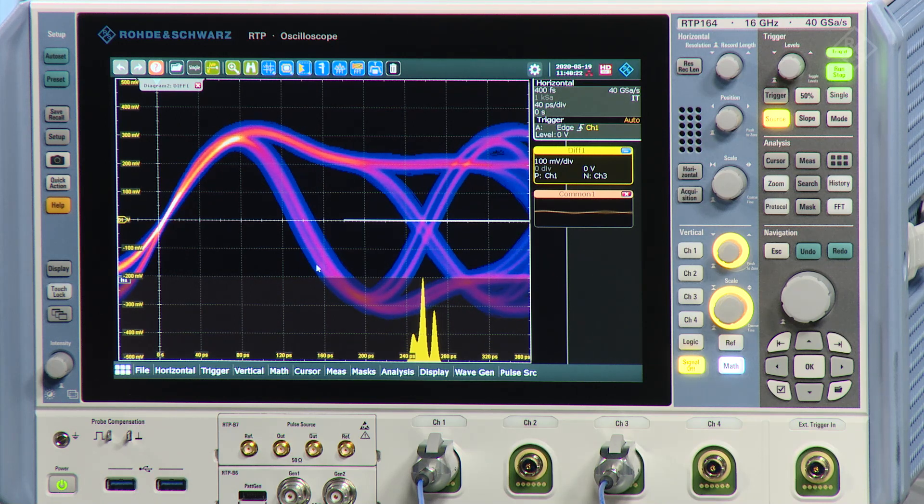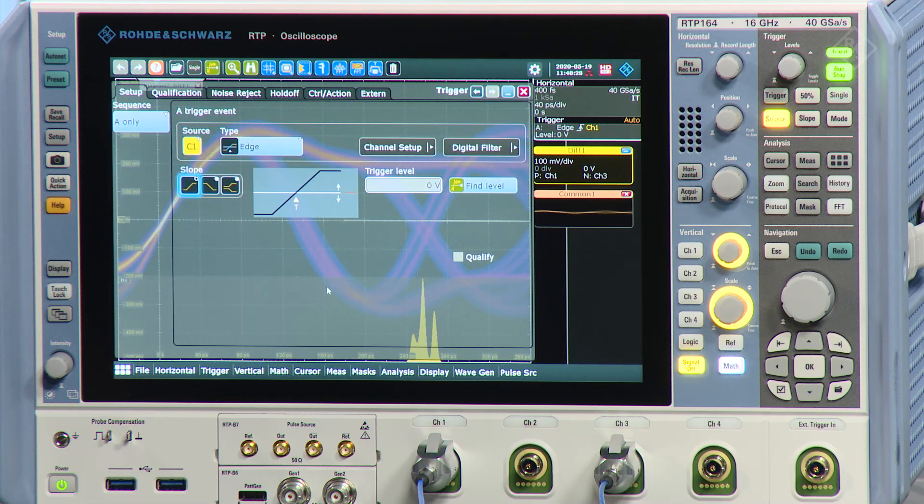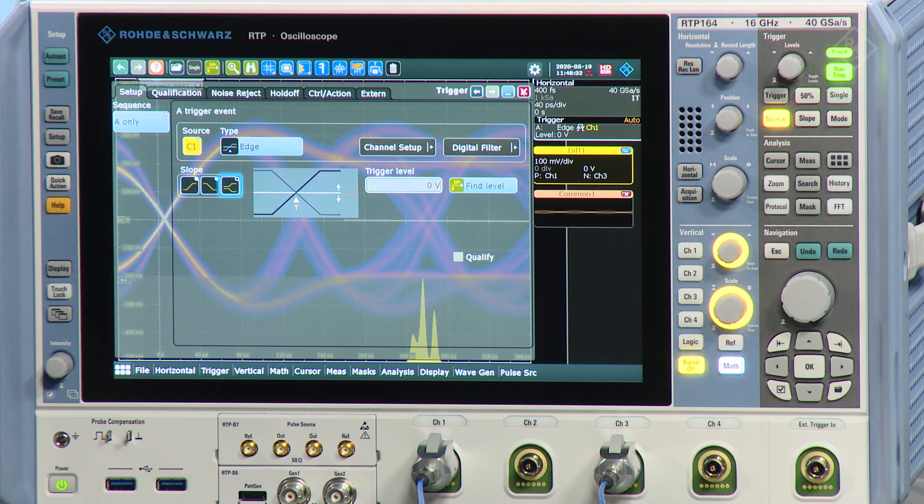The reason is that we don't have the right trigger condition. We have an edge trigger. So a couple of people would say, okay, can we change that to both edges? We can do that. It looks very much more like an eye pattern.